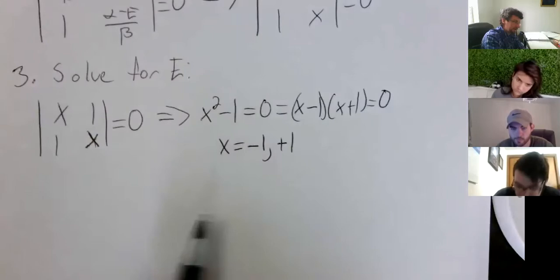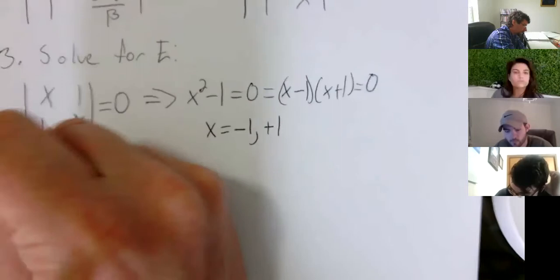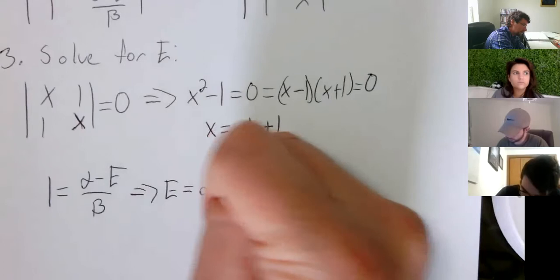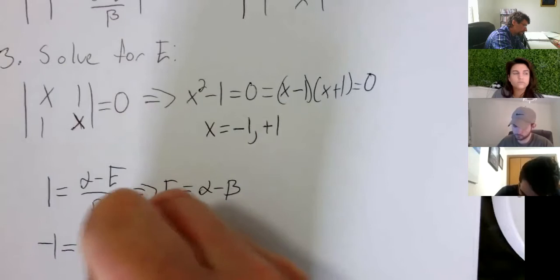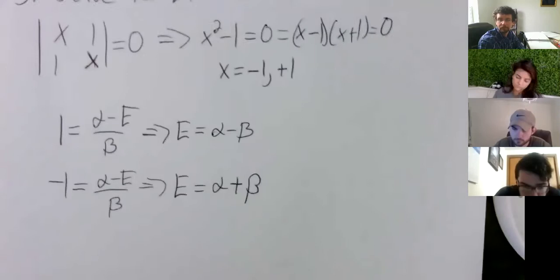Then, what you do is, you solve... You know these values of x. We set x equal to alpha minus E divided by beta. So, now all you do is alpha minus E divided by beta. We have that set up. And you solve for E. And when you do that, you get alpha minus beta. And then, for the negative 1, E is equal to alpha plus beta.